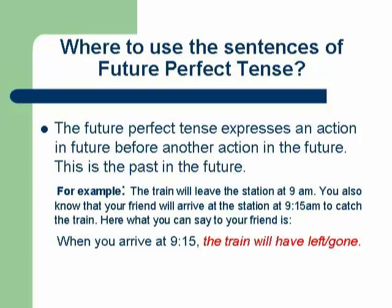The future perfect tense expresses an action in the future before another action in the future, or you can say this is the past in the future. For example, you know that the train will leave the station at 9 a.m. You also know that your friend will arrive at the station at 9:15 a.m. to catch the train. You can simply call your friend on his mobile to give him information about the timing of the train.